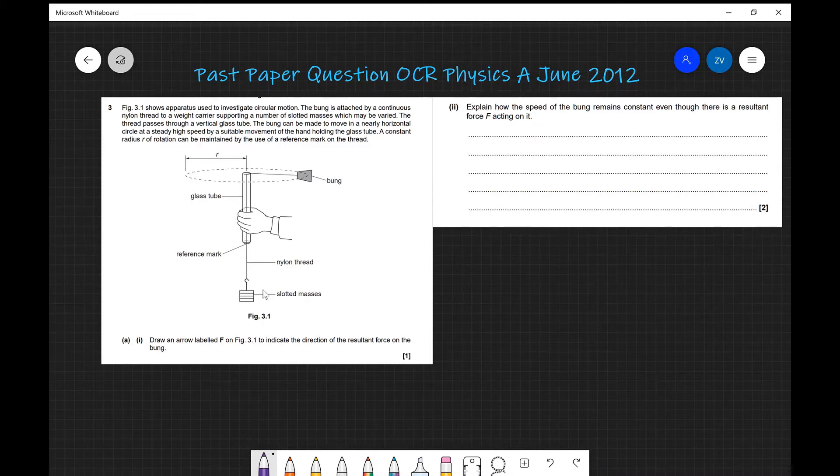You would spin this apparatus above your head. Now the first question says draw an arrow labeled F on figure 3.1 to indicate the direction of the resultant force on the bung.